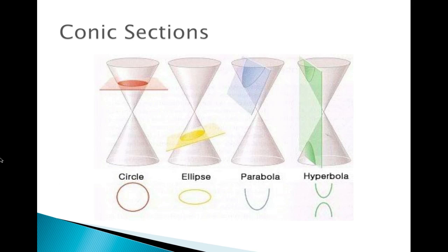So first of all, what is a conic? A conic section is the shape that you're going to get depending on how you intersect a plane with a double-napped cone. When I say double-napped cone, I mean these cones placed nose to nose, meeting right here.